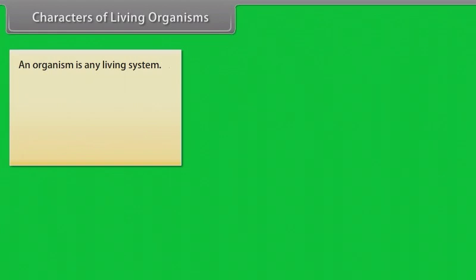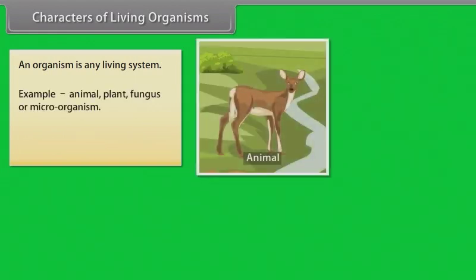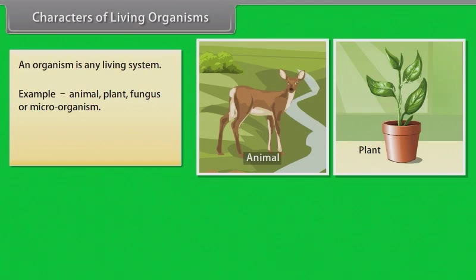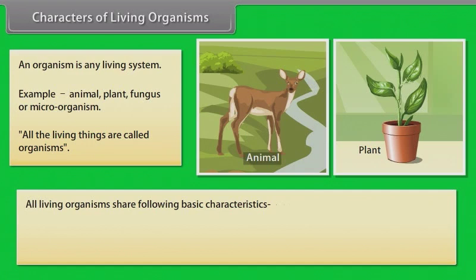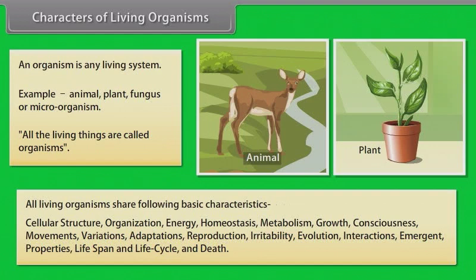An organism is any living system. Example: animal, plant, fungus or microorganism. All the living things are called organisms. All living organisms share following basic characteristics: cellular structure, organization, energy, homeostasis, metabolism, growth, consciousness, movements, variations, adaptations, reproduction, irritability, evolution, interactions, emergent properties, lifespan and life cycle.